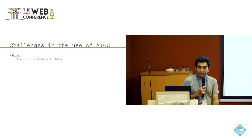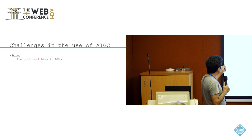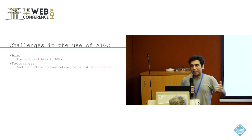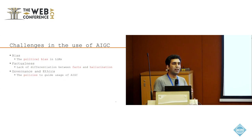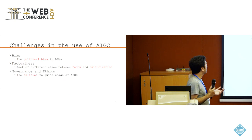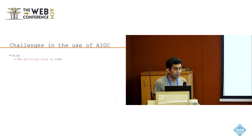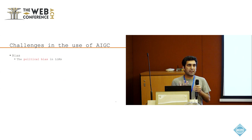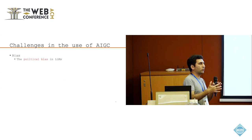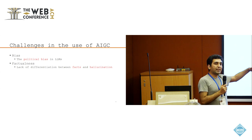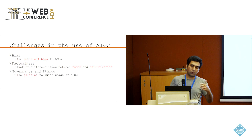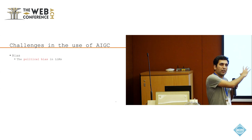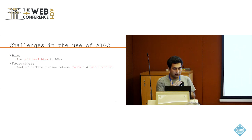Moving to challenges and future research directions: the first challenge is LLM bias. Most generative AI content is trained on internet data, which is not structured in a neutral way, so it carries inherent bias. For instance, ChatGPT is known to have a left-leaning bias in the US context. If a right-leaning politician deploys a bot already biased to the left, that can meaningfully impact how the tool behaves and how messages are delivered.